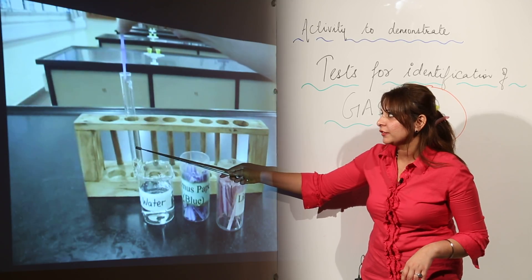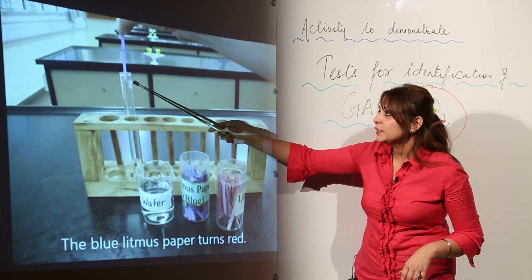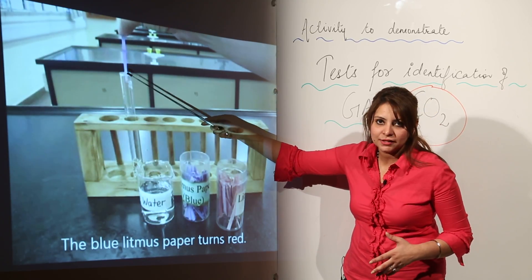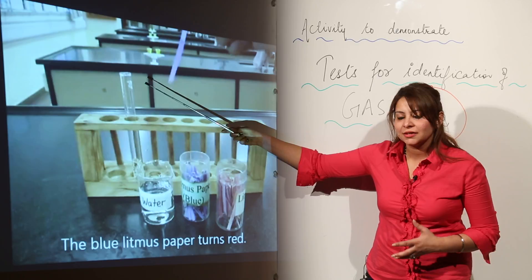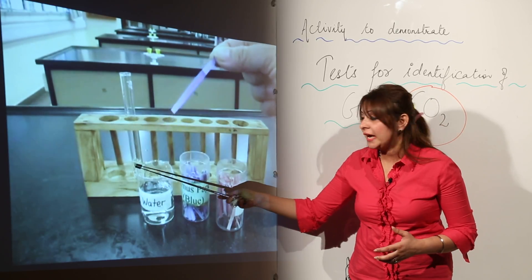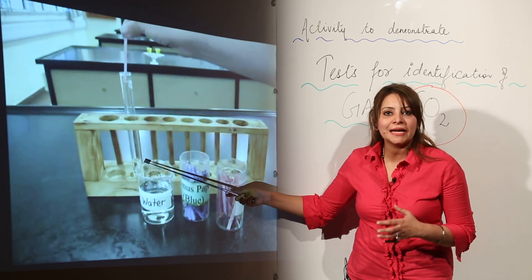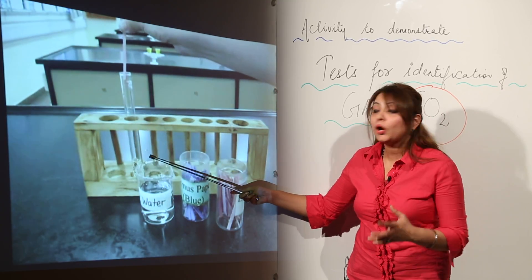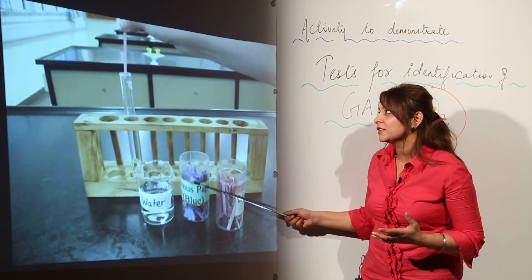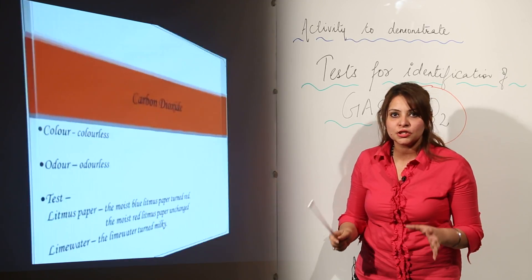Now what we are doing is adding water to this solution — we have carbonic acid — and we are using litmus paper. With the passage of time the litmus is just turning red. It is turning red because when you add water to carbon dioxide, water plus CO₂ gives rise to a weak acid, that is carbonic acid, and acid turns blue litmus red.